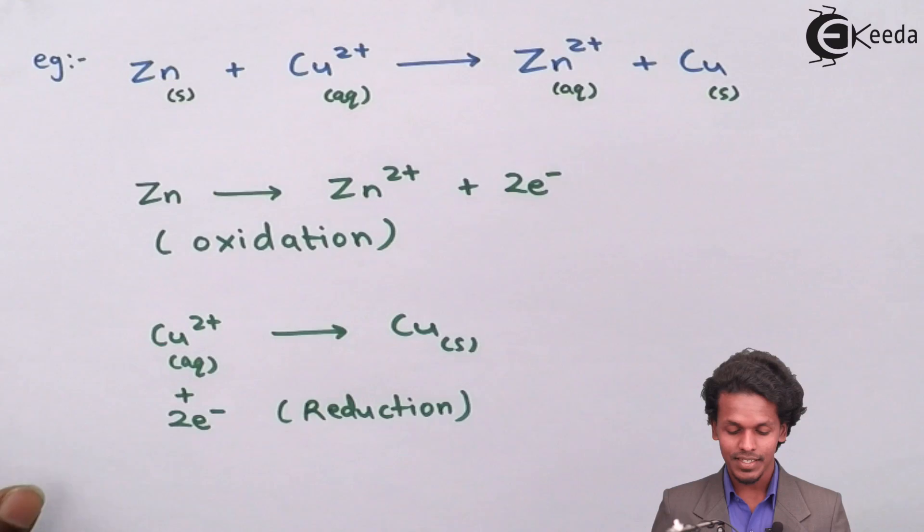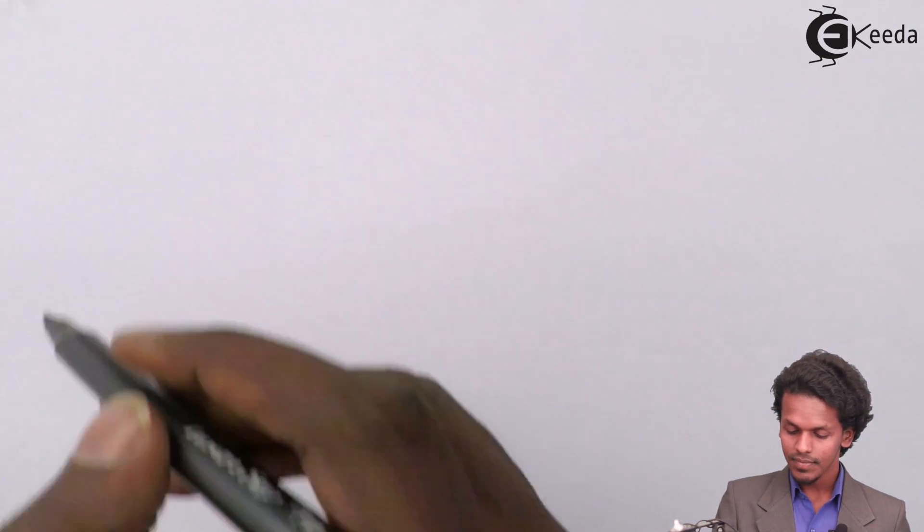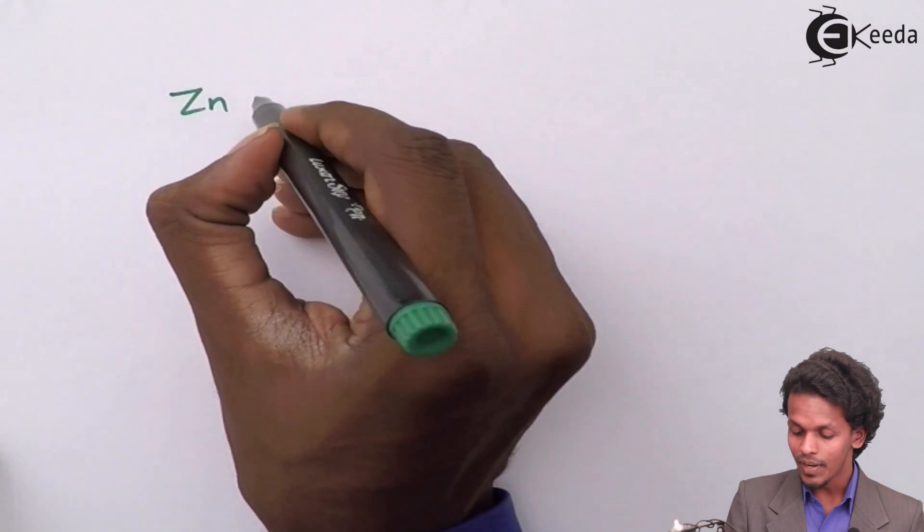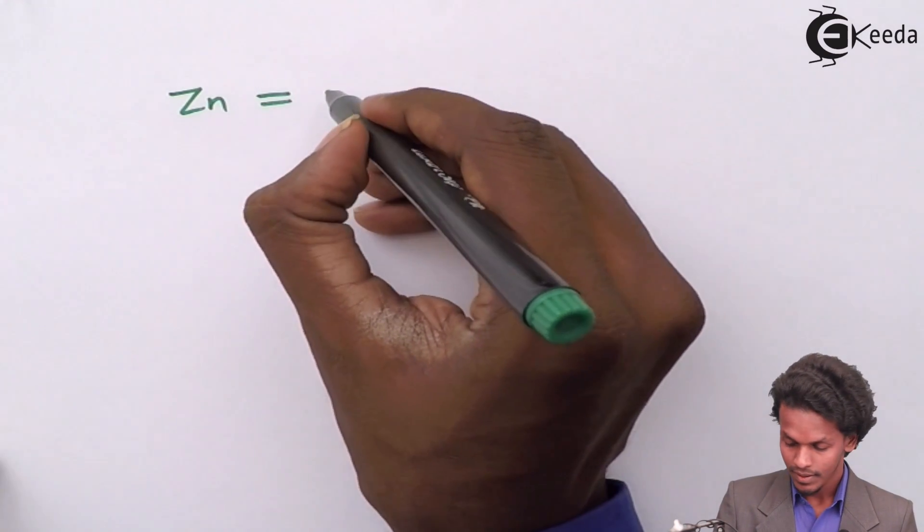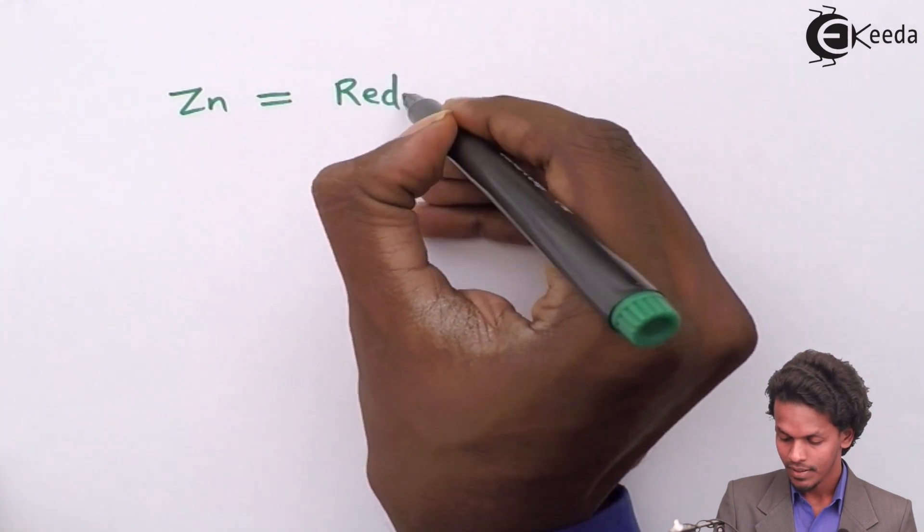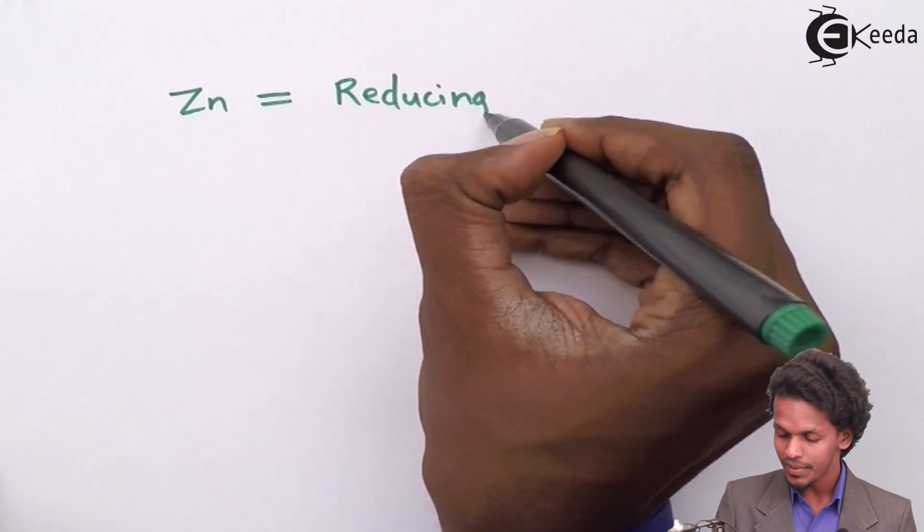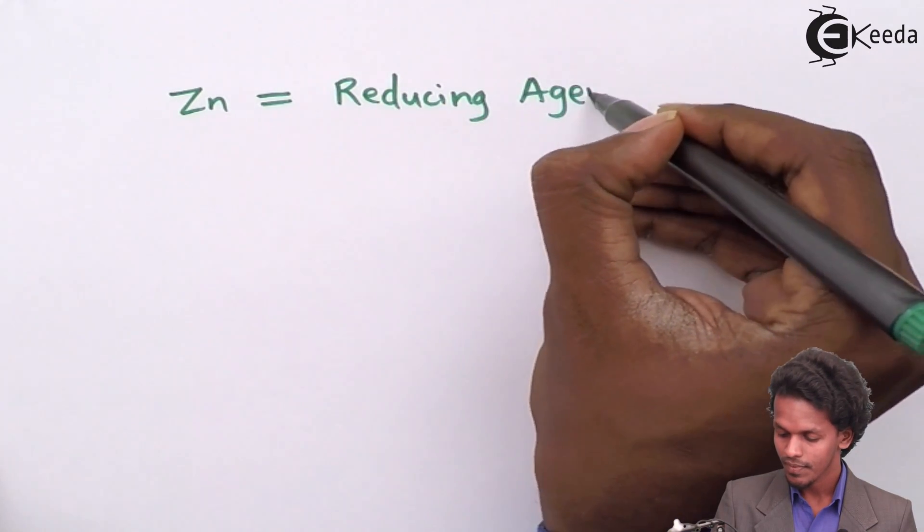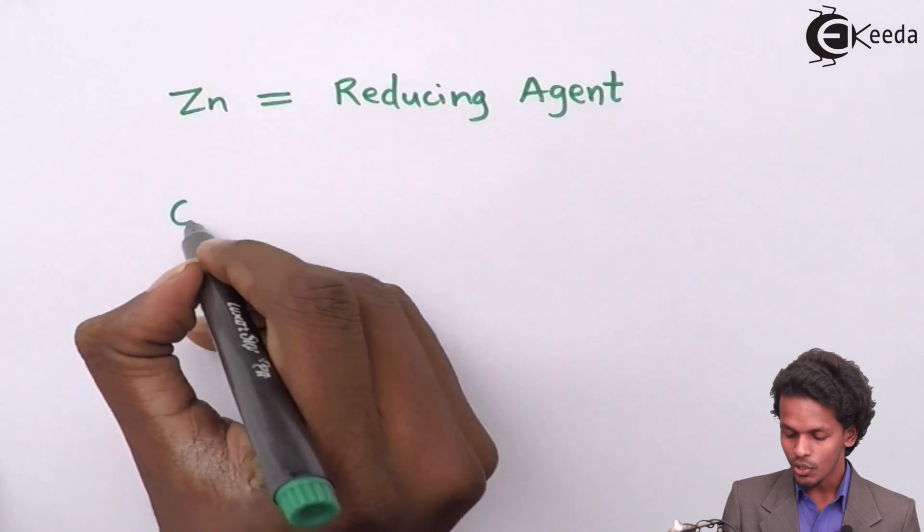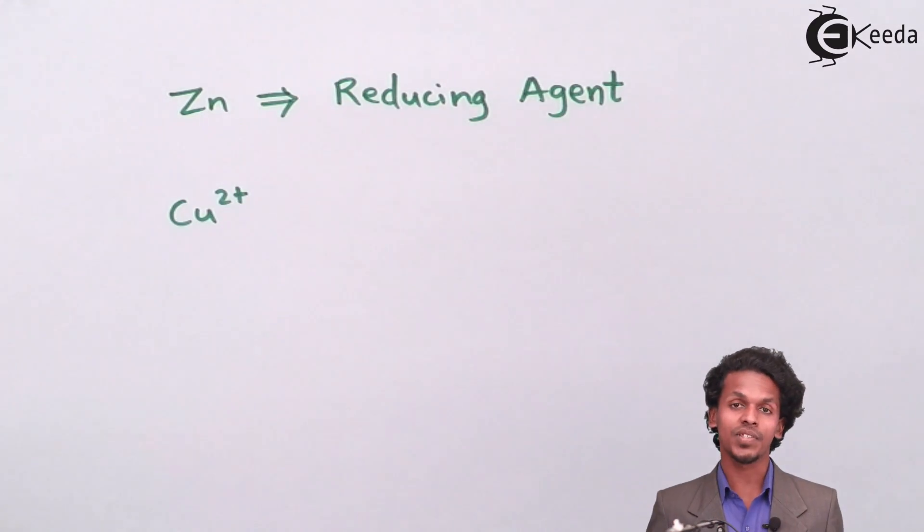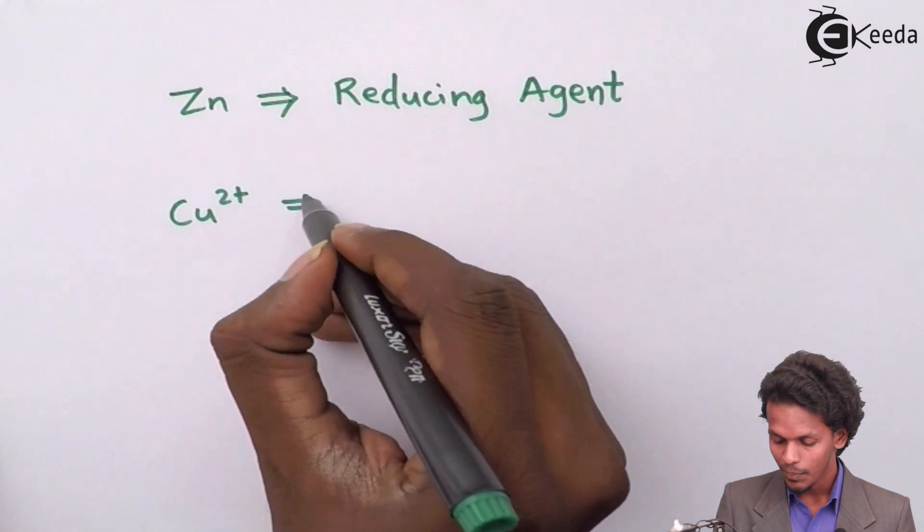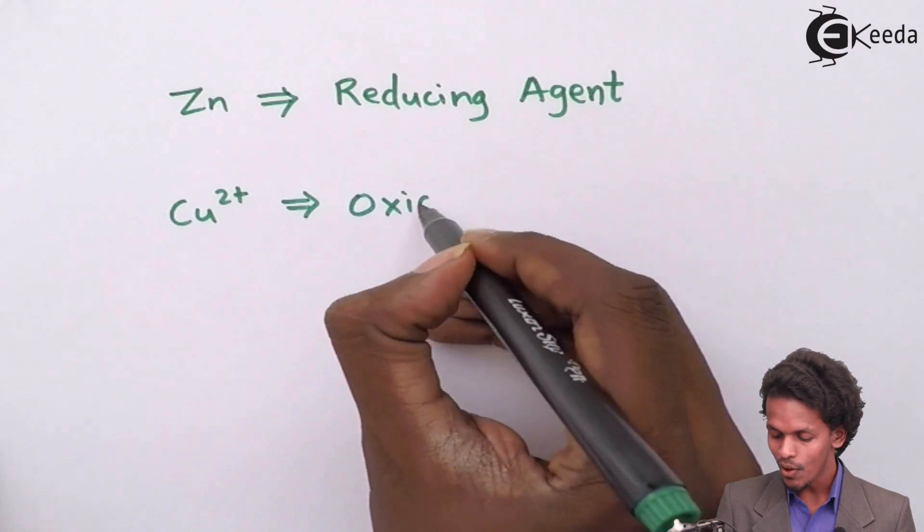And hence, in this case, Zn will behave like a reducing agent. While the Cu 2 plus, which shows the reduction process, will be the oxidizing agent.